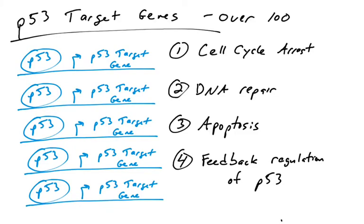So in this video I want to address the fourth category of P53 target genes. In the previous video we talked about P53 turning on genes involved in cell cycle arrest, DNA repair, and apoptosis. Now I want to talk about the genes that control the feedback regulation of P53.